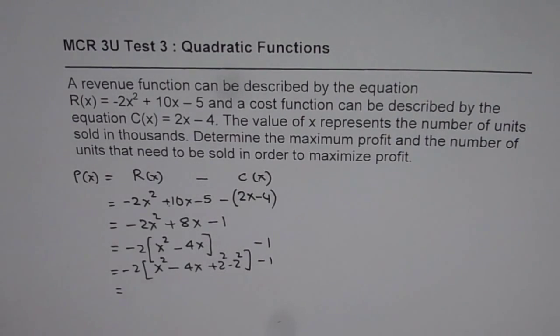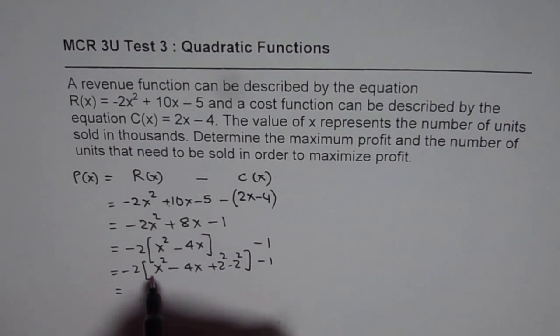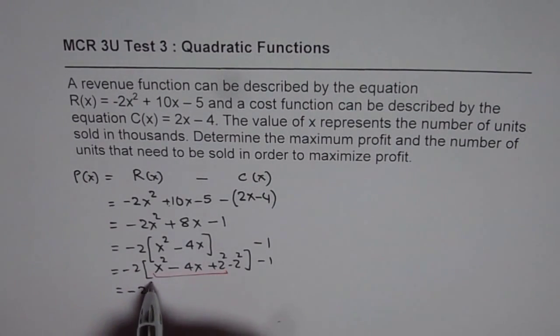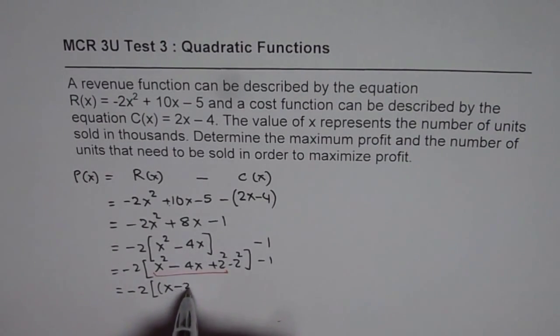So we'll add and subtract 2 squared minus 1. And as you know, the first three terms form a perfect square. That's the whole idea of doing this, completing the squares. We get minus 2. And we can write this as x minus sign from here, 2 from there, square.